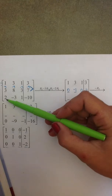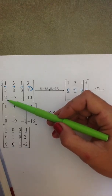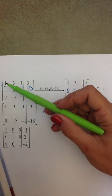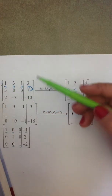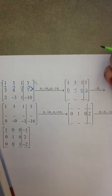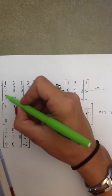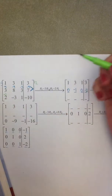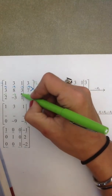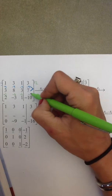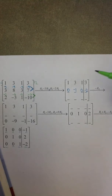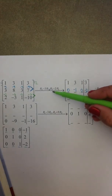This two needs to become a zero, and the opposite of two is negative two. So negative two needs to be multiplied by the row that contains a one in the same column — that's row one. Negative two times one is negative two, negative two times three is negative six, negative two, and negative six.